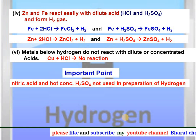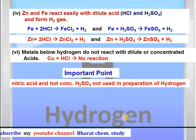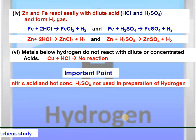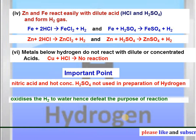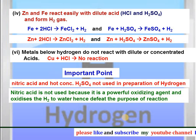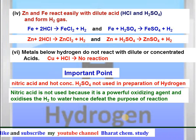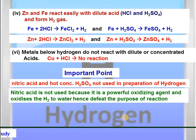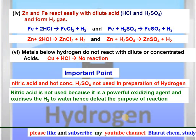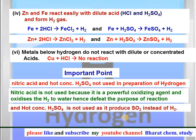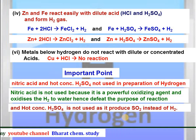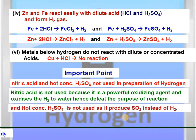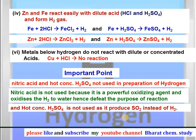Important points: Nitric acid and concentrated sulfuric acid are not used in the preparation of hydrogen. Nitric acid is not used because it is a powerful oxidizing agent and it oxidizes the hydrogen formed to water, thereby defeating the purpose of the reaction. Similarly, hot and concentrated sulfuric acid is not used as it produces sulfur dioxide during its reaction instead of hydrogen gas.